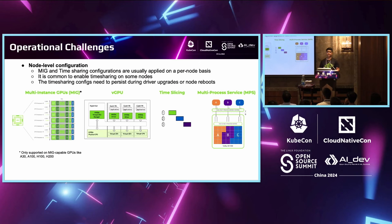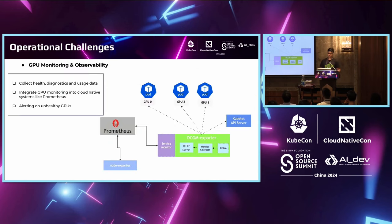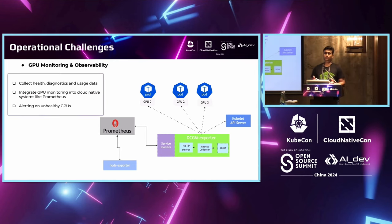So I've gone over all of these operational challenges, and we can see there is a need for automation and a consistent approach so that all of this operational knowledge can be codified and executed at large scale. And let's not forget the DCGM exporter — when it comes to large clusters, monitoring and observability are important for operational success. You want the ability to collect health diagnostics and usage data, integrate GPU metrics and telemetry into cloud-native systems like Prometheus, and get alerting on unhealthy GPUs. What better way than to use the strengths of Kubernetes to achieve this automation at large scale?